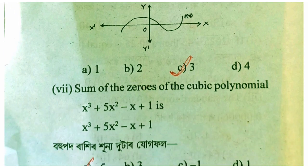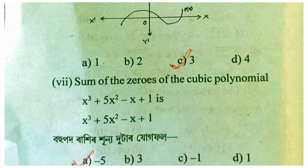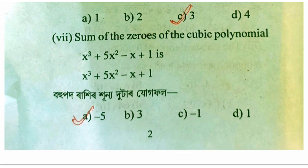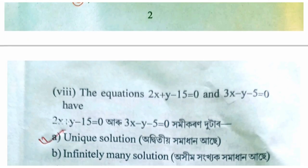The sum of zeros of the cubic polynomial x cubed plus 5x squared minus x plus 1. The equations are 2x plus y minus 15 equals 0 and 3x minus y minus 5 equals 0.